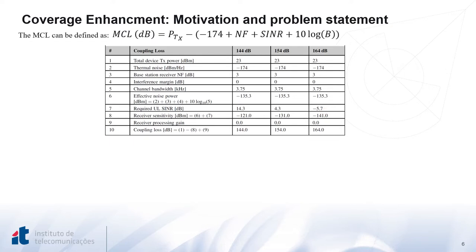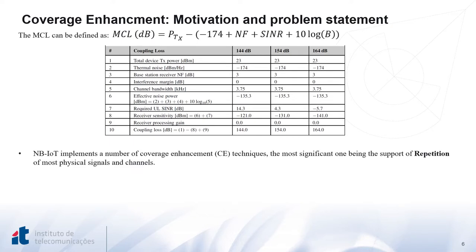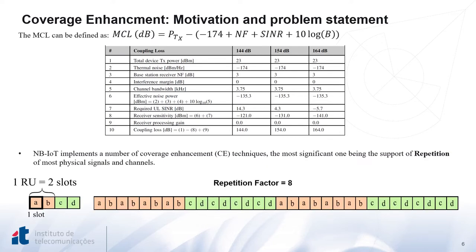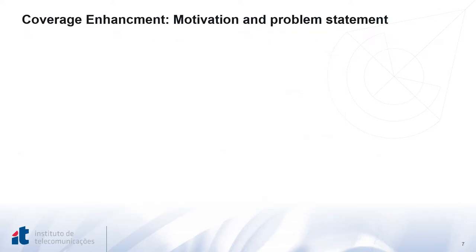Therefore, the goal of NB-IoT networks here becomes to push the SNR values to a level where communication can still be supported. NB-IoT has implemented a number of coverage enhancement techniques, the most significant being the support of repetitions of the physical signals and channels. To give an example, considering one resource unit with two slots and adopting a repetition factor equal to eight, the frame is repeated in the following manner, mainly to increase the SNR and thus guarantee reliable communication at the receiver side.